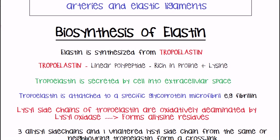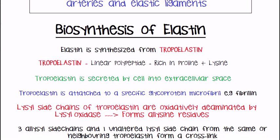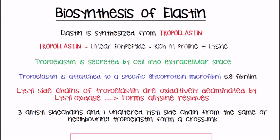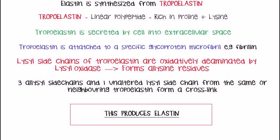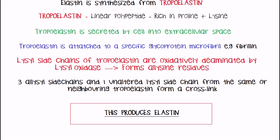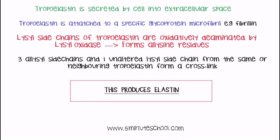The lysine side chains of tropoelastin are then oxidatively deaminated by the enzyme lysine oxidase, which converts the lysine side chains into allysine residues.